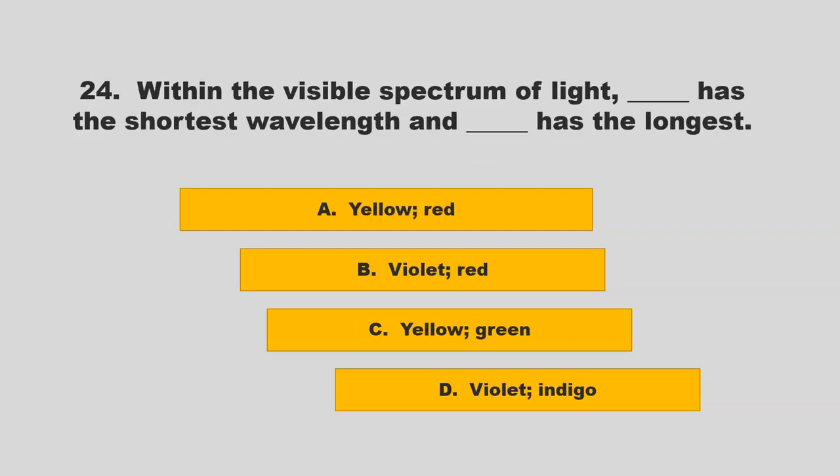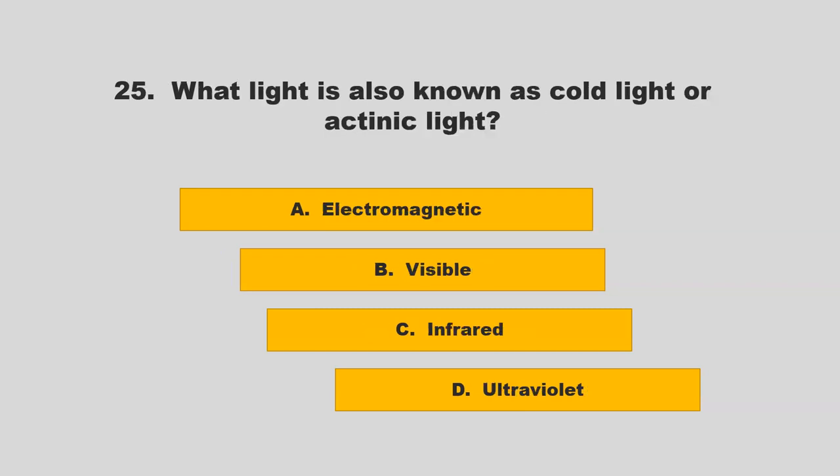Within the visible spectrum of light, blank has the shortest wavelength and blank has the longest. Is it yellow-red, violet-red, yellow-green, or violet-indigo? If you chose B, violet-red, you are correct.